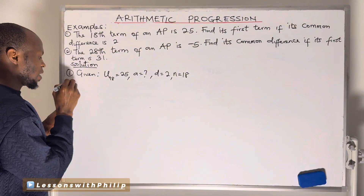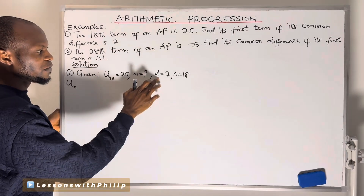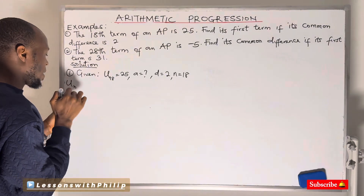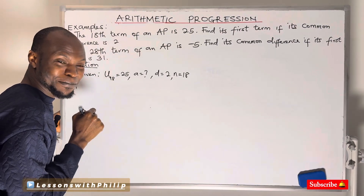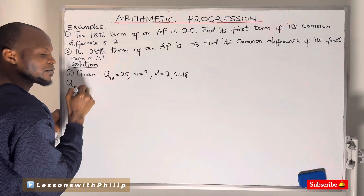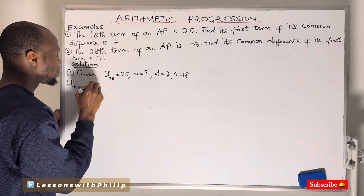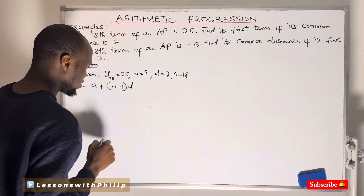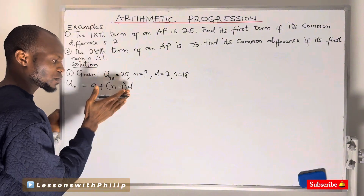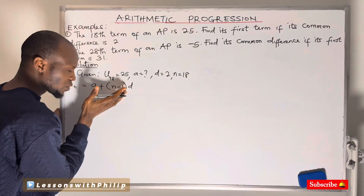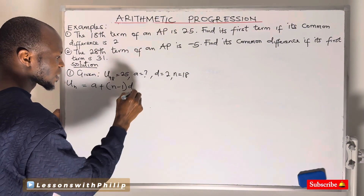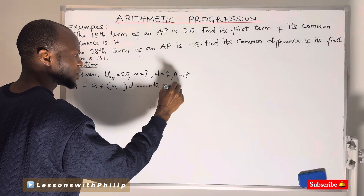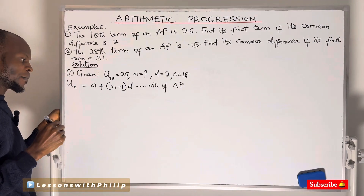Since I'm given the common difference — I've been told that the common difference is 2 — I'll use the formula for an arithmetic progression. The nth term of an arithmetic progression is given as: a plus (n minus 1) multiplied by the common difference. I just need to substitute the values that have been given into the formula. This is the formula for the nth term of an AP.